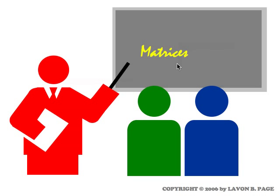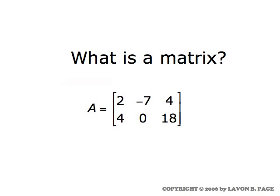We'll begin to study matrices with the very simplest matrix operation, which is addition, but first we need to understand what a matrix is. That's very simple. A matrix is nothing more than a rectangular array of numbers. Here we see a matrix named A. It's very common to name a matrix with a capital letter.